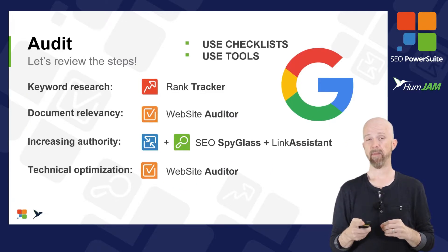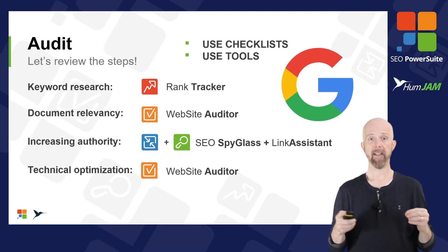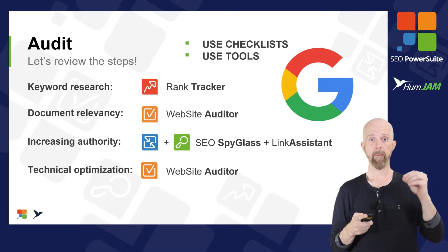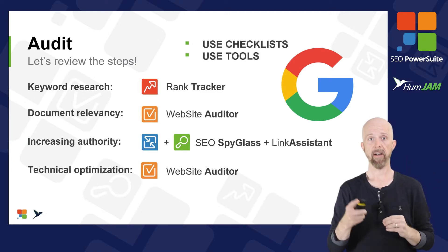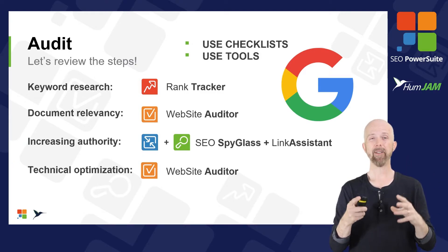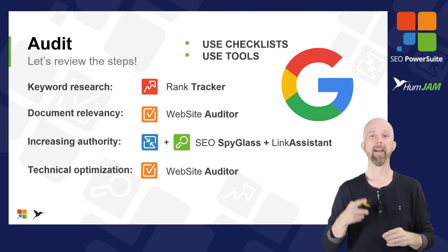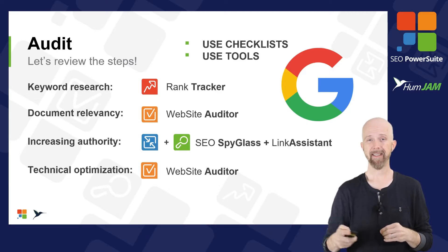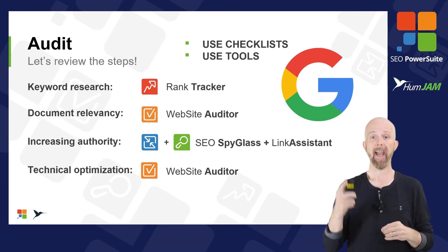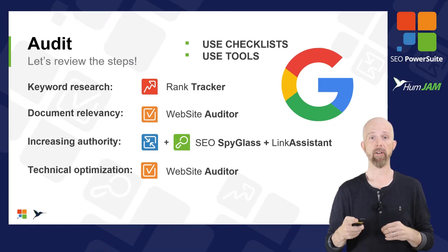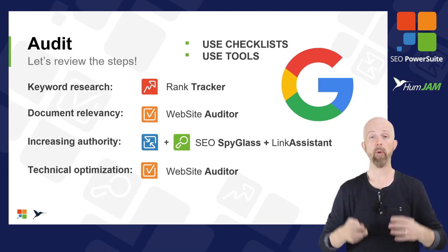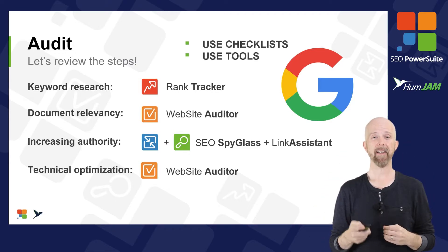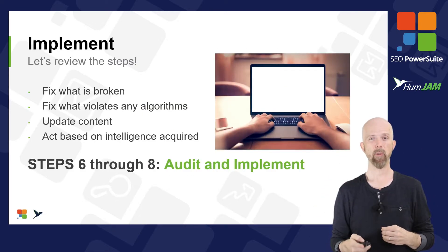The next phase after Research is the Audit. In RAIM, Audit is the next phase. We use these tools: the Rank Tracker, Website Auditor, SpyGlass, and LinkAssist — using our checklist and tools to go through this audit.